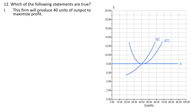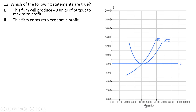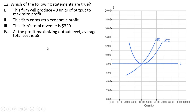Question 12: which statements are true? This firm will produce 40 units to maximize profit, where price equals marginal cost—true. This firm earns zero economic profit: price equals average total cost at 40 units—true. Total revenue is $8 times 40, or $320—true. At the profit-maximizing output, average total cost is $8—true. Price equals average total cost, so zero economic profit. All statements are correct.